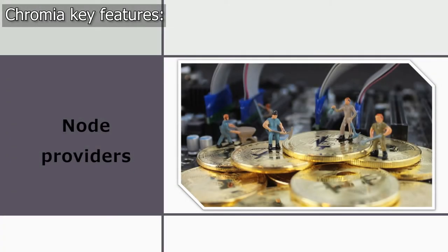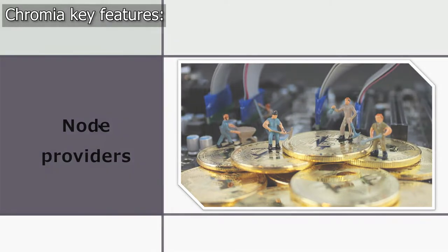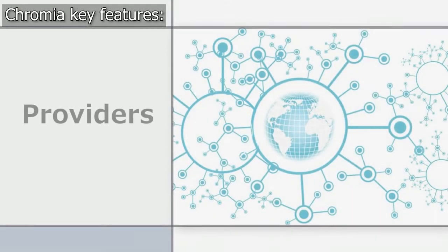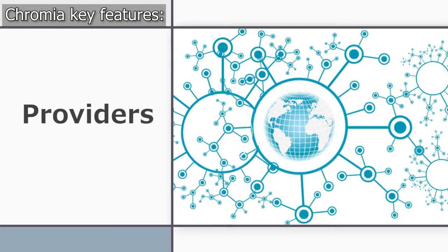Node providers replace miners from traditional proof-of-work blockchains and ensure that in case of colluding among major mining pools, they won't be able to exert control over the network. For instance, in Bitcoin, if the four largest mining pools colluded, they could gain control. The first set of providers will be picked by the Chromia team, but every subsequent provider will be voted on by the existing providers.